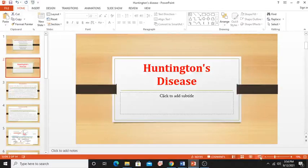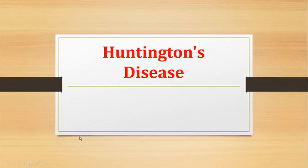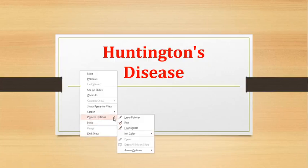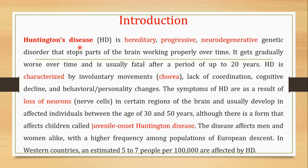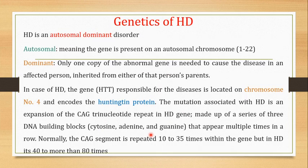Welcome back to this next video, the second video on Huntington's disease. In the last video I told you that Huntington's disease is a hereditary progressive neurodegenerative genetic disorder that stops part of the brain working properly over time. It is characterized by involuntary movements, lack of coordination, cognitive decline, and behavior or personality changes. It usually affects individuals between the age of 30 and 50 years, although juvenile onset Huntington's disease affects children as well.